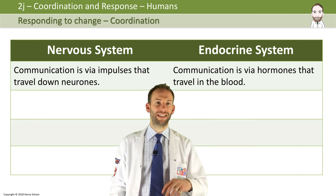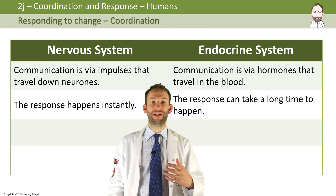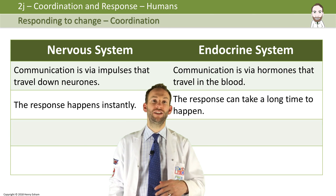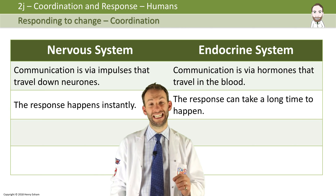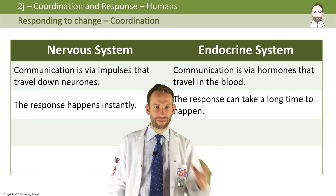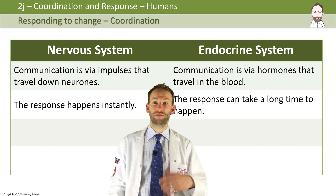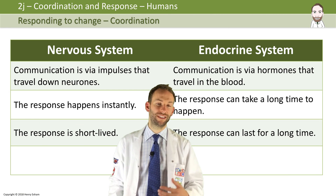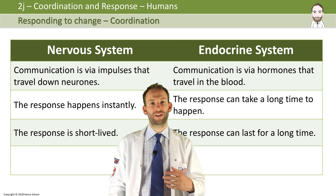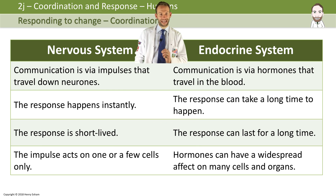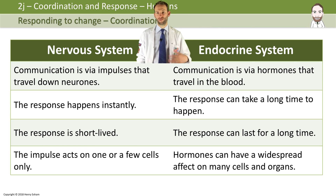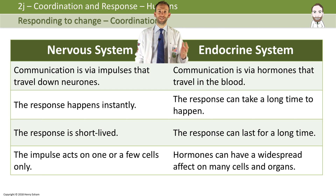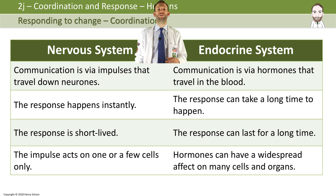The nervous system happens instantly straight away; the endocrine system's effects may take a long time. The nervous system response is very short-lived — usually it's done quickly. The endocrine system response can last for a long time, potentially weeks or even longer. The impulse in the nervous system usually only acts on a very small area, a couple of cells, whereas hormones can have huge widespread effects on whole organs or hundreds of different cells. So two completely different systems, but they complement each other and the body can decide which one to use in which scenario.